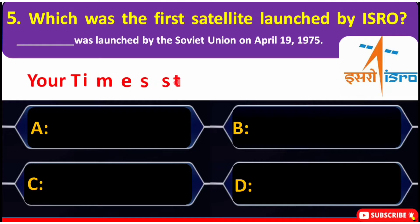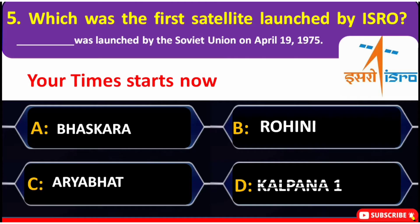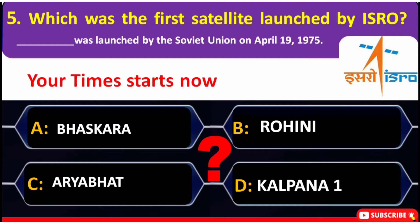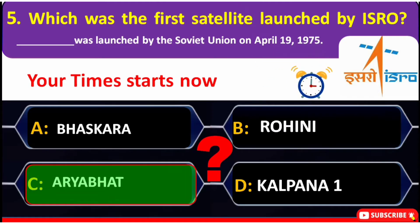Which was the first satellite launched by ISRO? It was launched by Soviet Union on 19th April 1975. A. Bhaskara, B. Rohini, C. Aryabhatta, D. Kalpana 1. Correct answer is C — Aryabhatta.